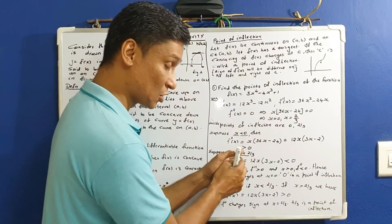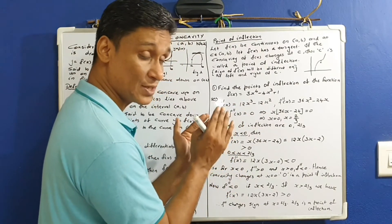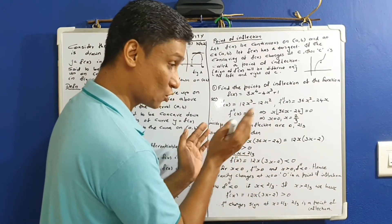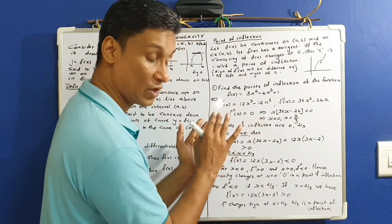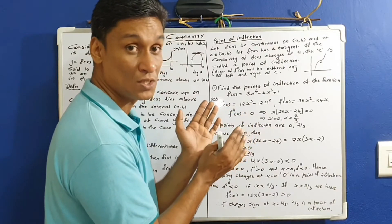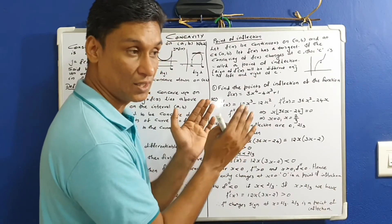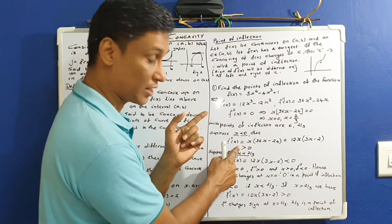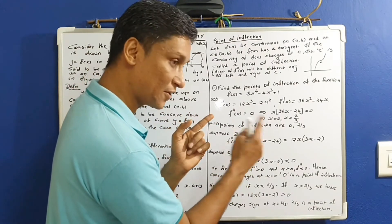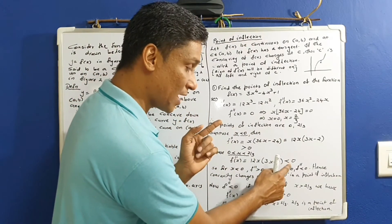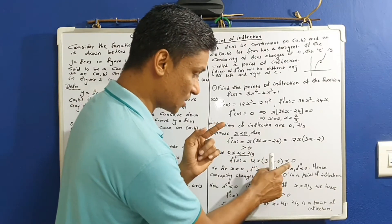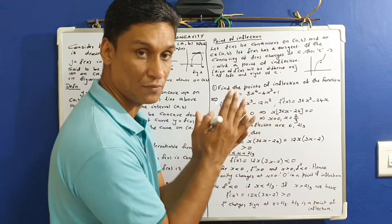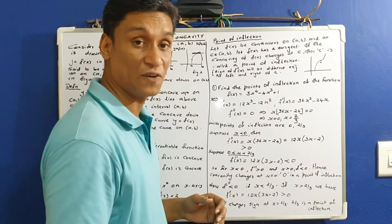If x is less than 0, f double dash x is greater than 0. If x lies between 0 and 2 by 3, f double dash x is less than 0. The sign changes to the left and right of 0, so 0 is a point of inflection.